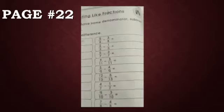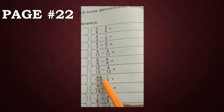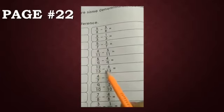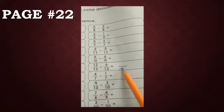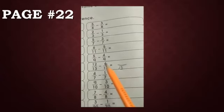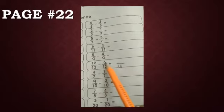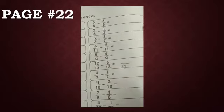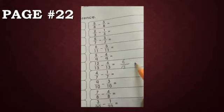Next question: 12 upon 13 minus 6 upon 13. These are like fractions, so write 13 as it is. Now count after the smallest number — 7, 8, 9, 10, 11, 12 — that gives 6. Write 6 over there. This is your answer.